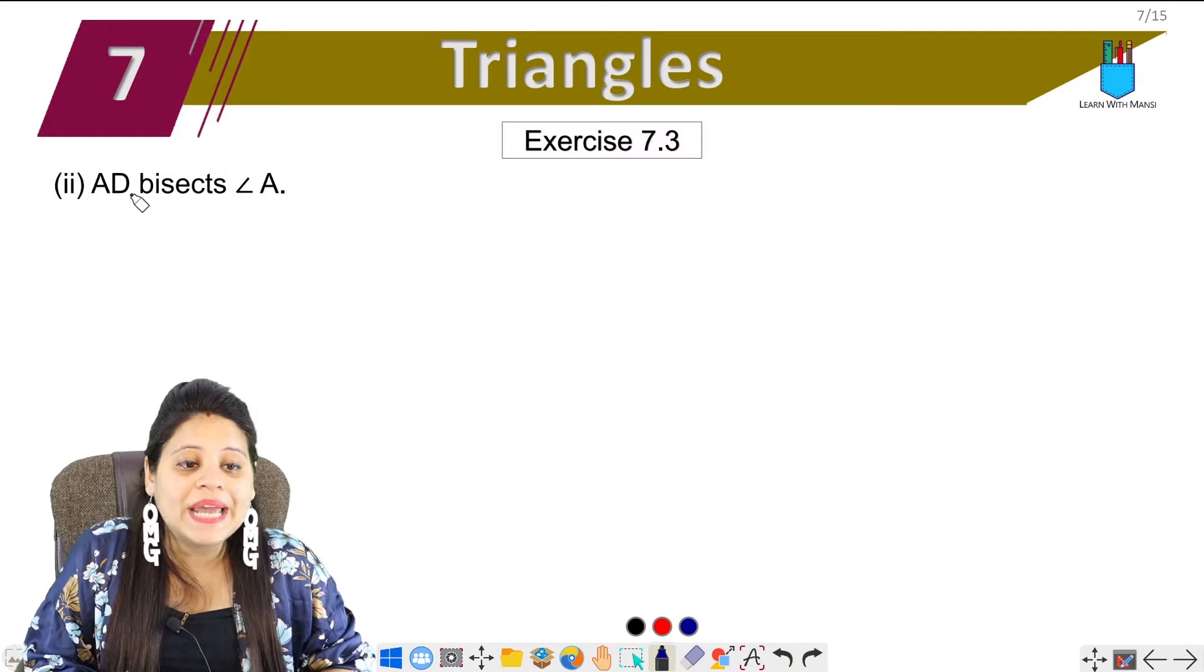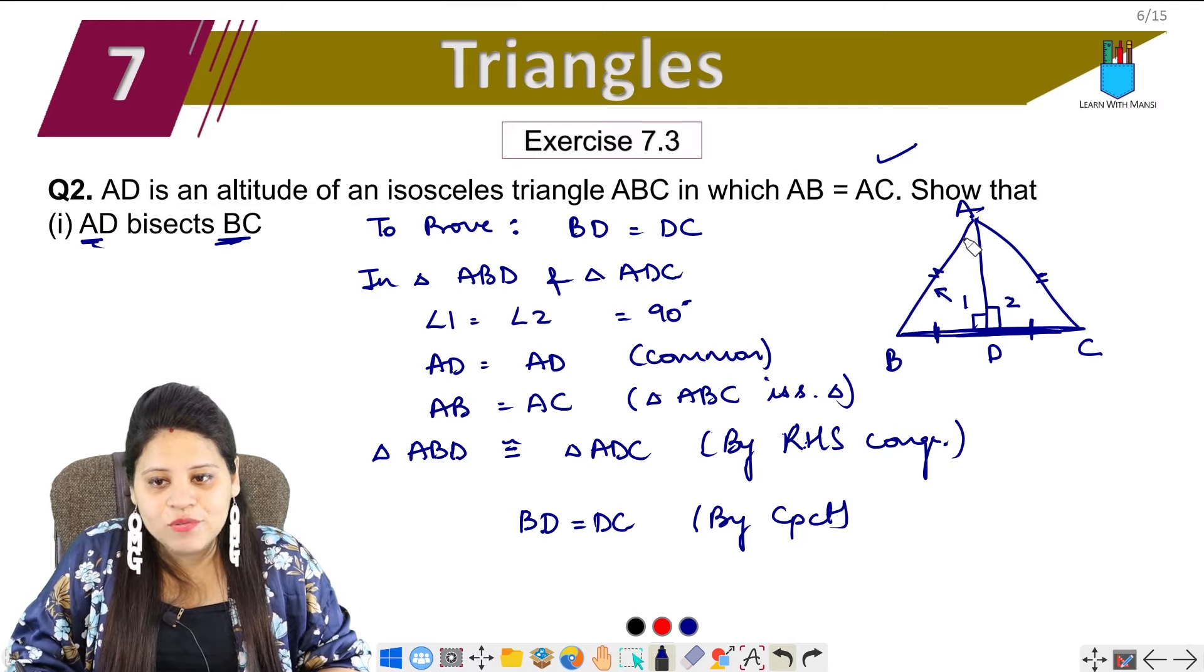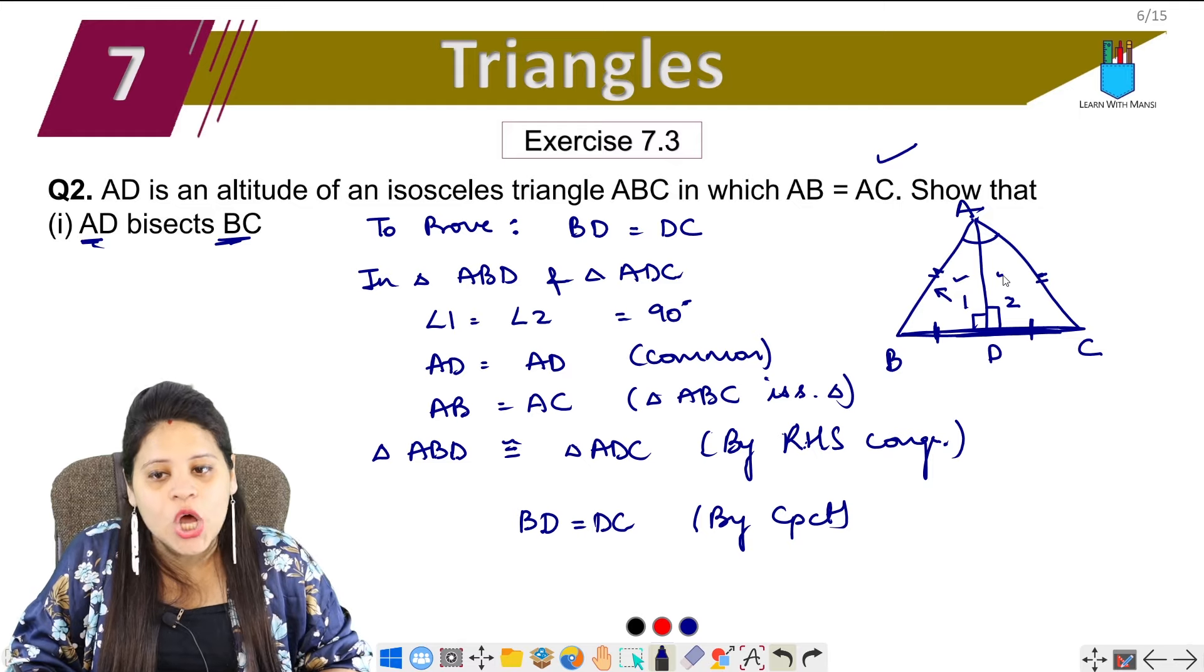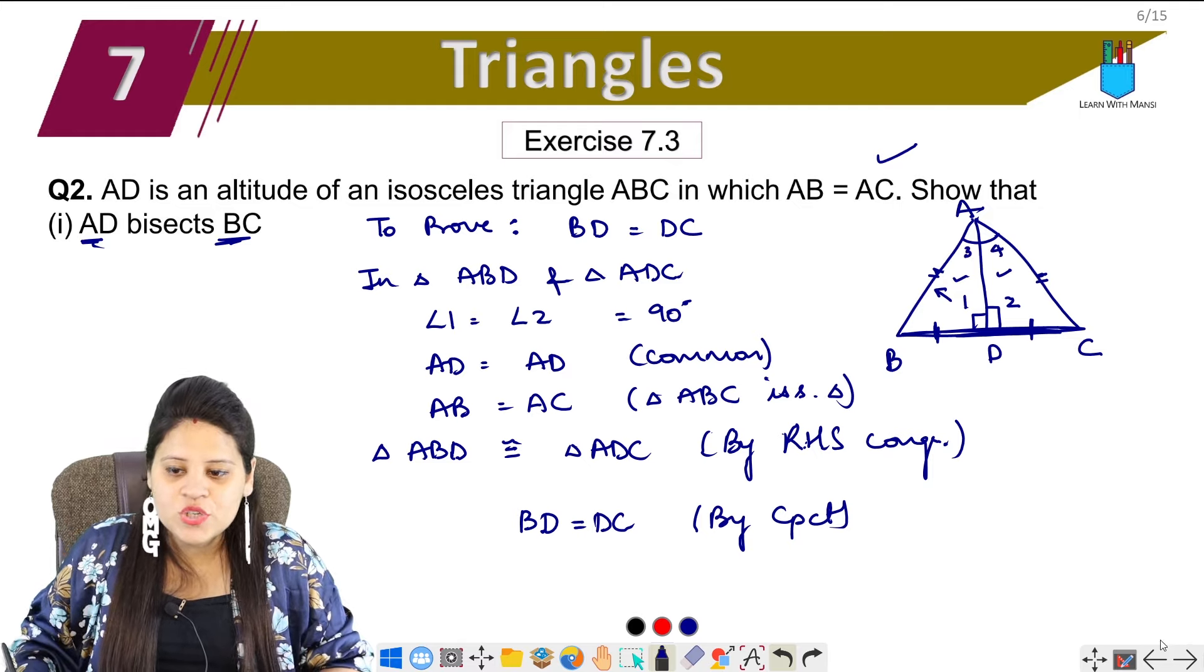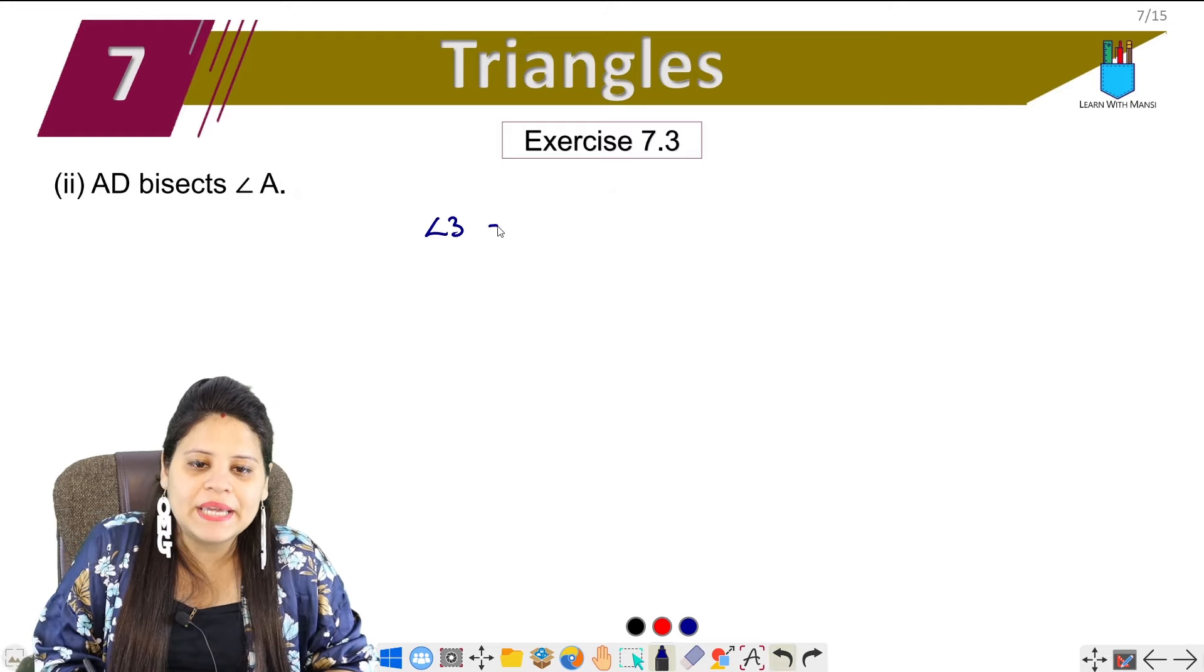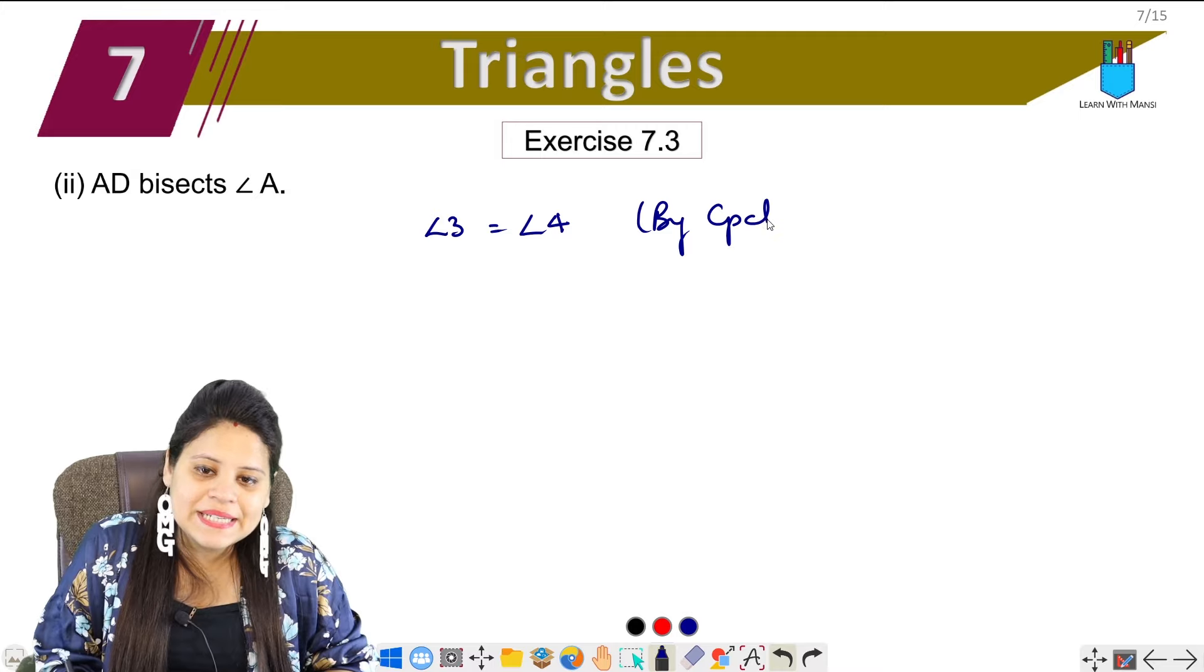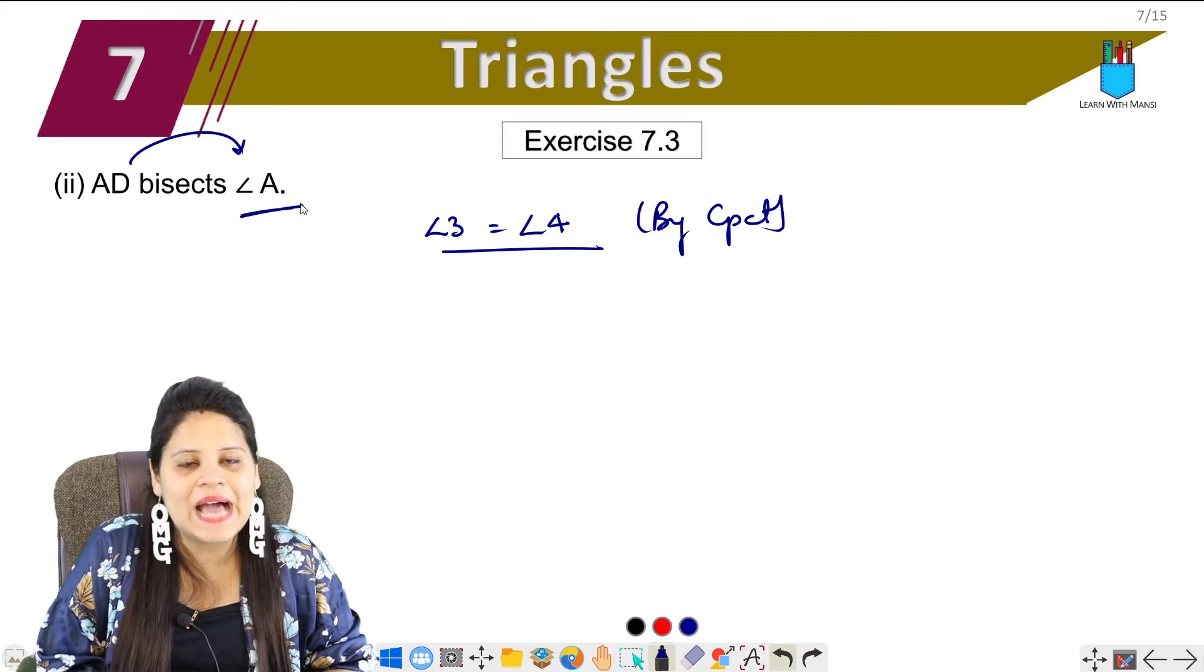In the second part, AD bisects angle A. Now AD bisects this angle, so it's very simple. Now we have proved that both triangles are congruent. So if I give this name as 3 or 4, we will write simple one line here. Angle 3 is equal to angle 4 by CPCT. And if both angles are equal, we can say AD bisects angle A.